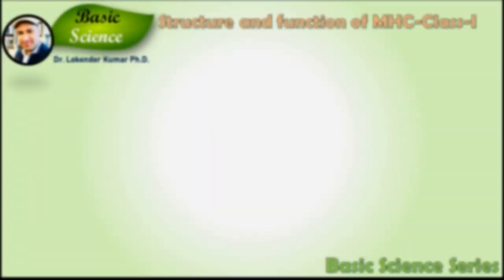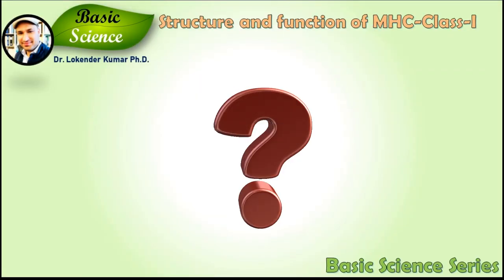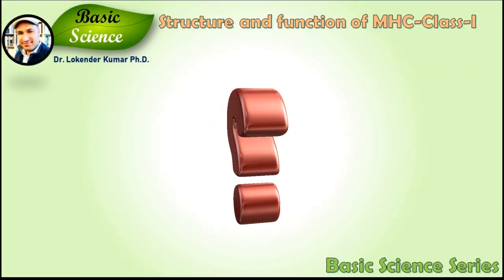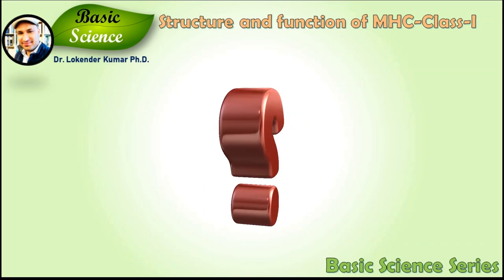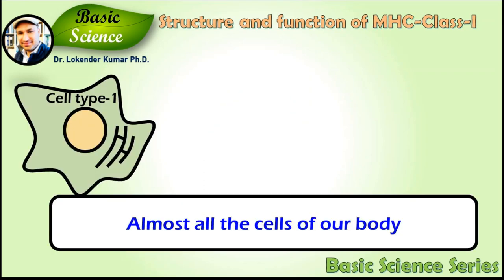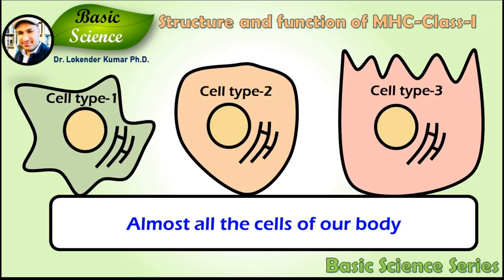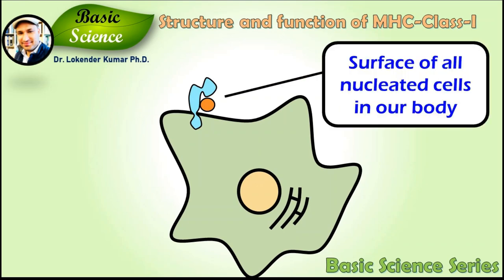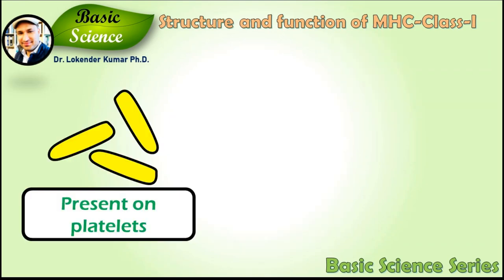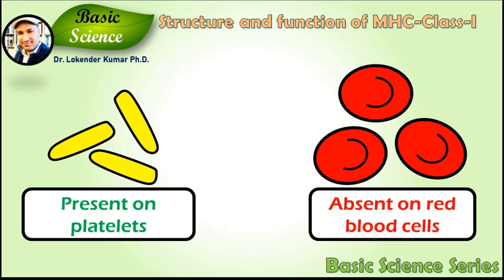The first question is: where are MHC class 1 molecules found? They are present in almost all the cells of our body — on the cell surface of all nucleated cells. It is very important to note that they are present on platelets but not on red blood cells.